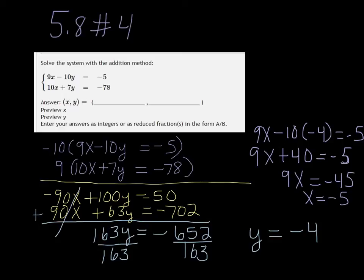So in this box you put negative 5 for your X value, and then your Y value negative 4. Of course you can always plug both numbers into both equations to make sure that you are correct.